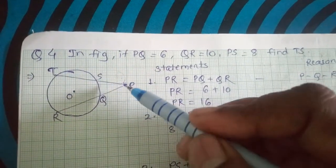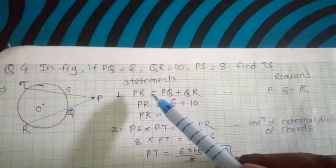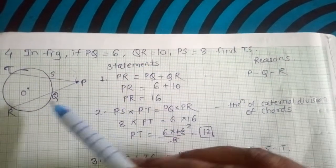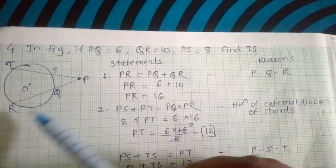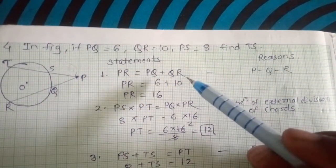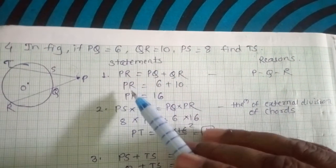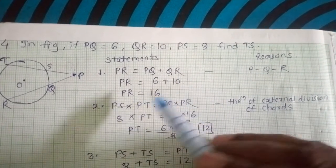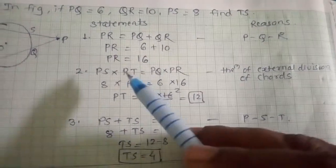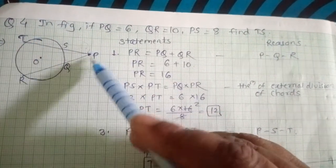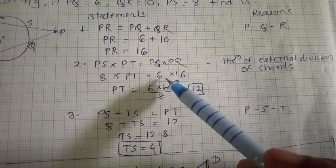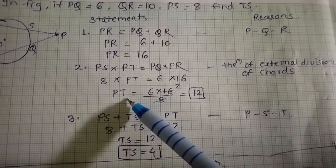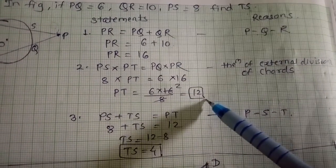First we find PR: PR = PQ + QR = 6 + 10 = 16. By the theorem of external division of chords: PS × PT = PQ × PR. So 8 × PT = 6 × 16 = 96, giving PT = 12.